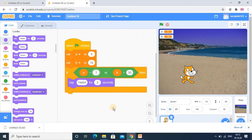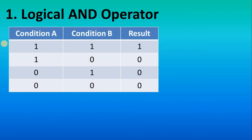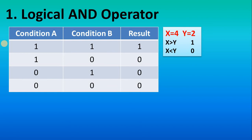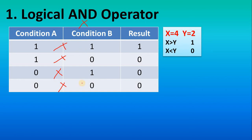Now we move to the AND operator. In AND, both conditions must be true. AND works like multiplication — 1 times 1 is 1, 1 times 0 is 0, 0 times 0 is 0. In general English, 'I will do this work and that work' means you are doing both. Whenever both conditions are true, the result is true; otherwise it is false.